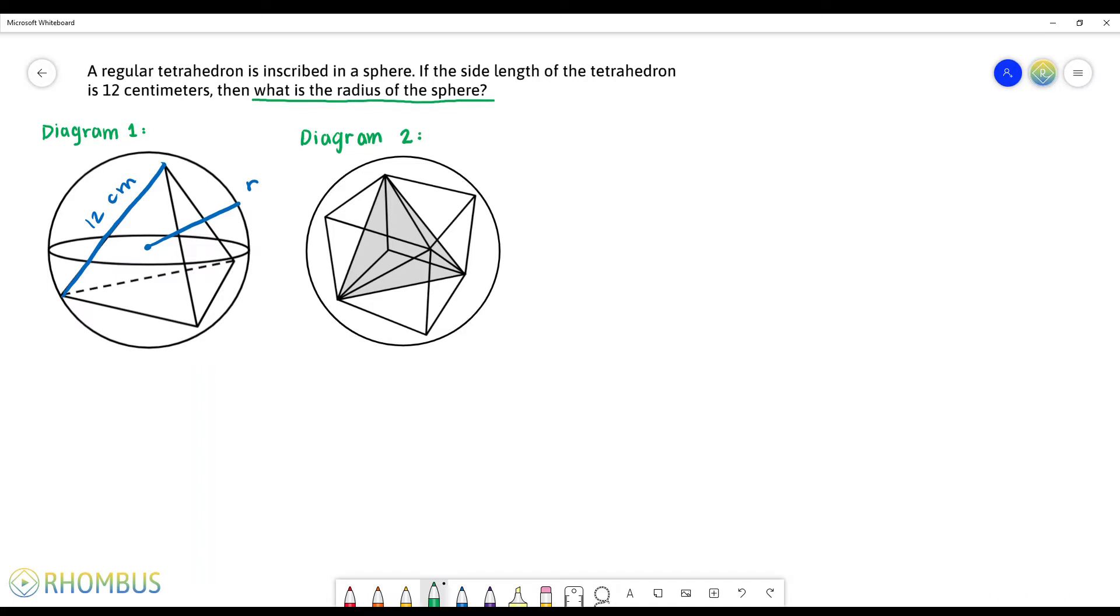We can see that every edge of the tetrahedron creates a diagonal like this on each of the faces of our cube. Now let's visualize this two-dimensionally. So let me just take another color. Let's take a look at this face of the cube.